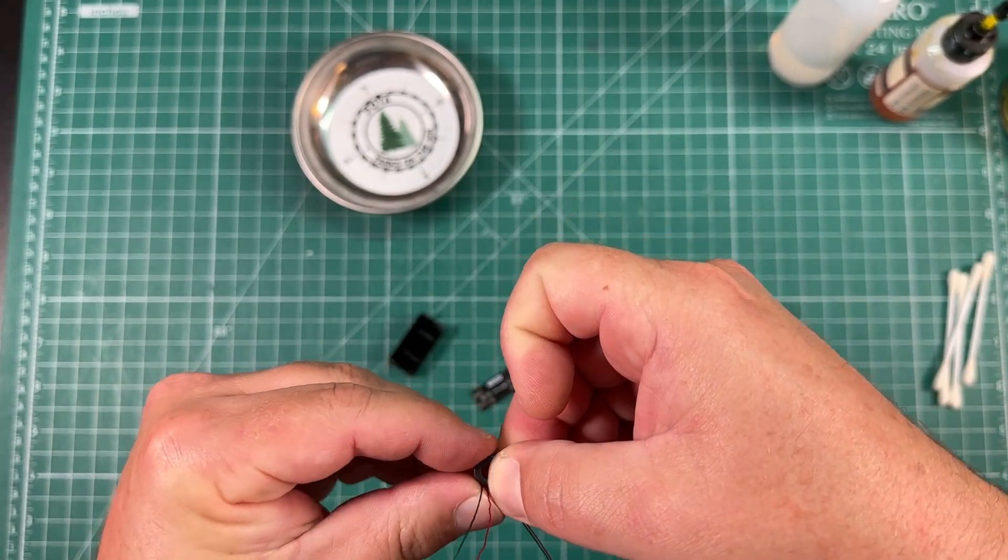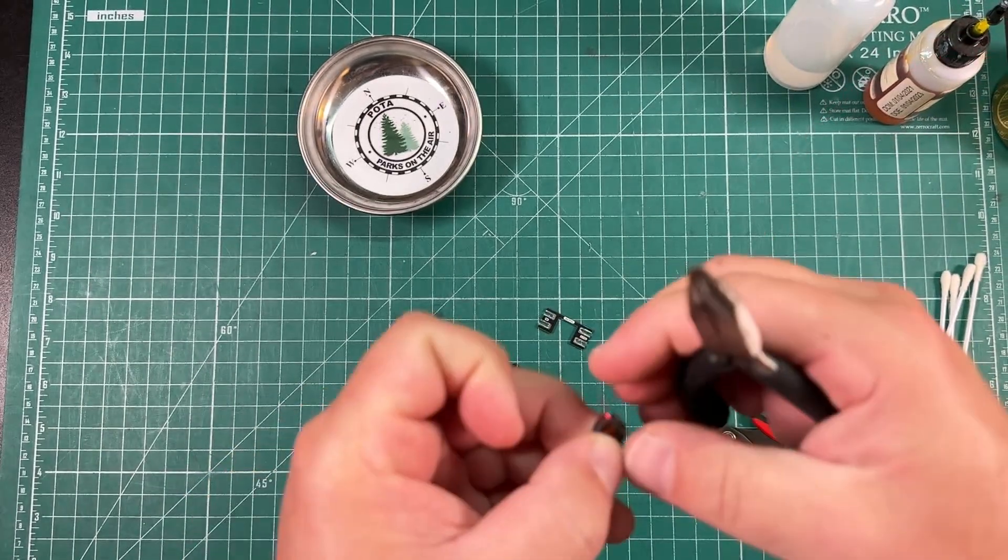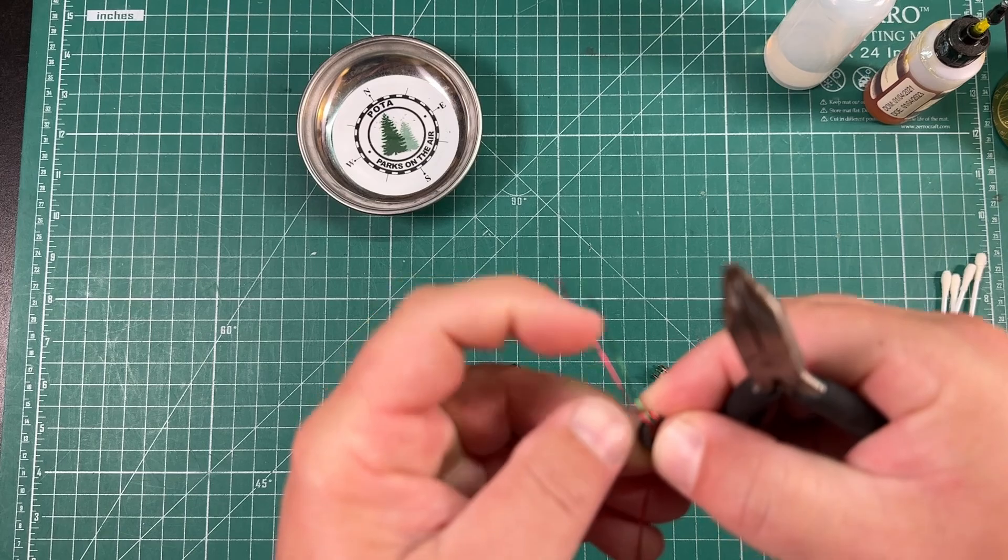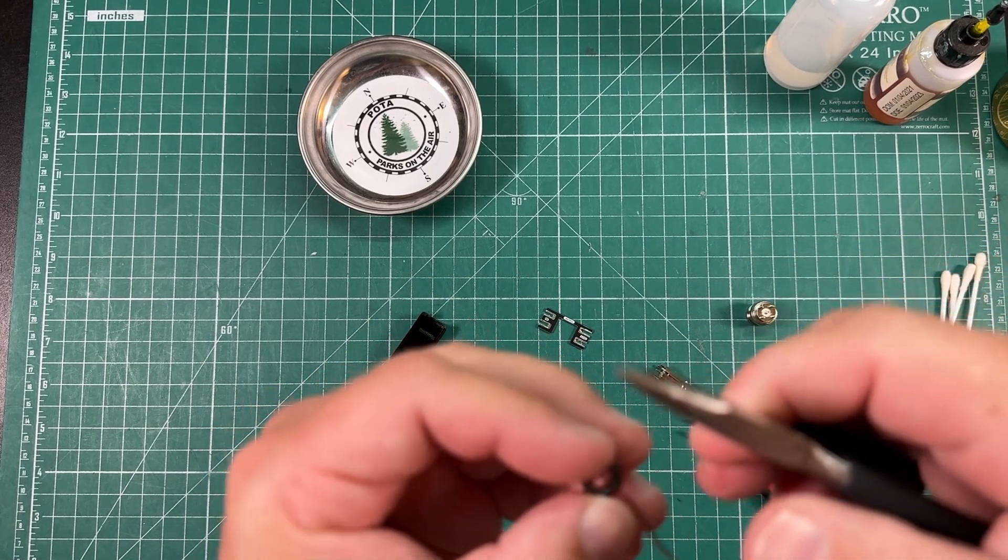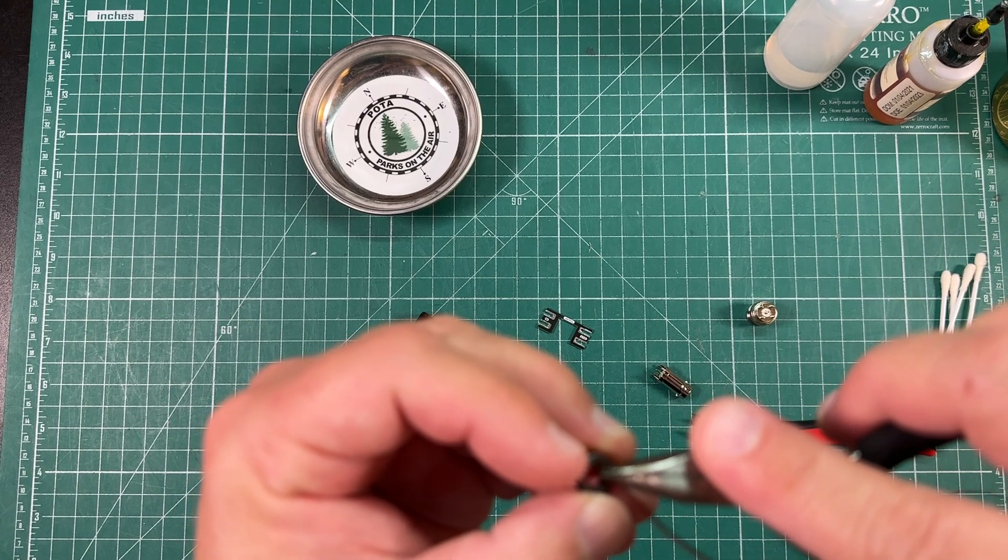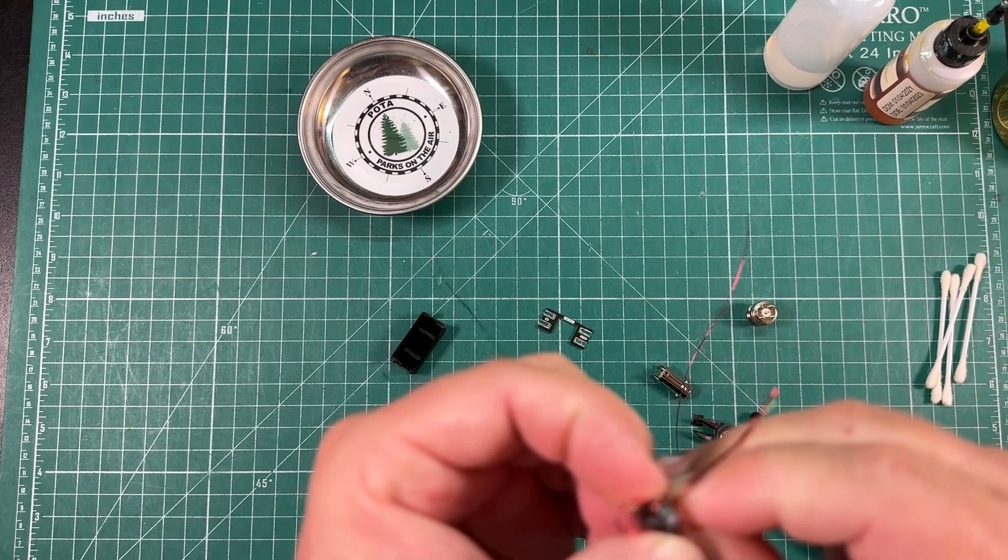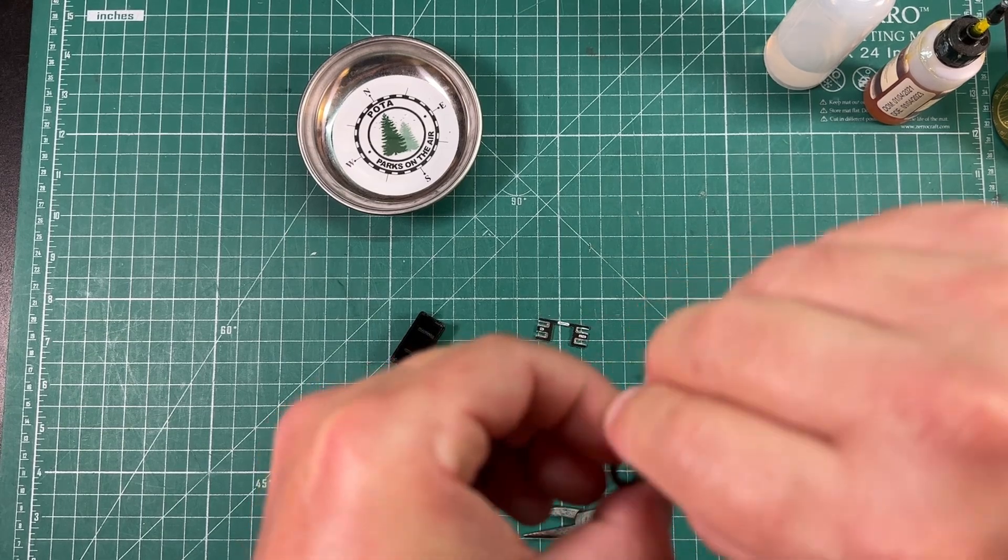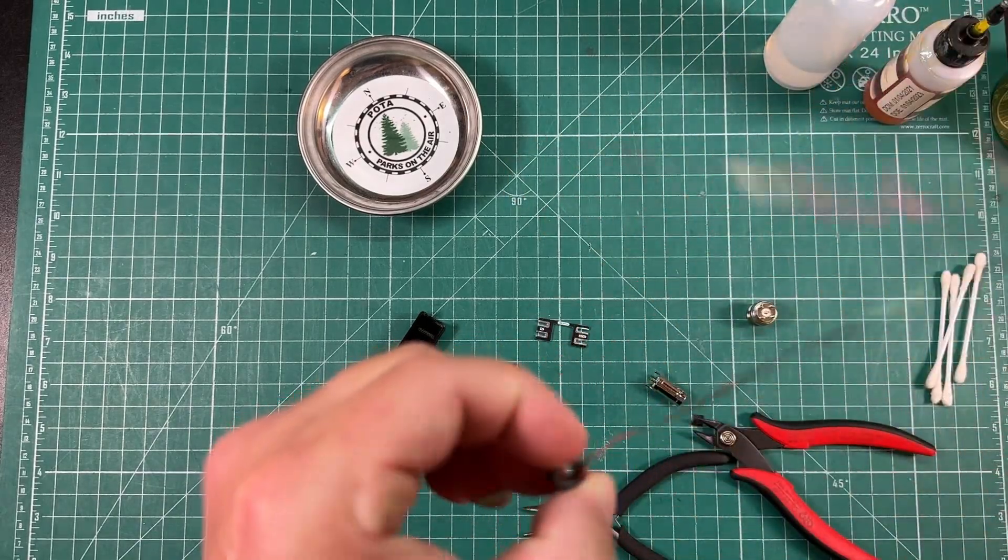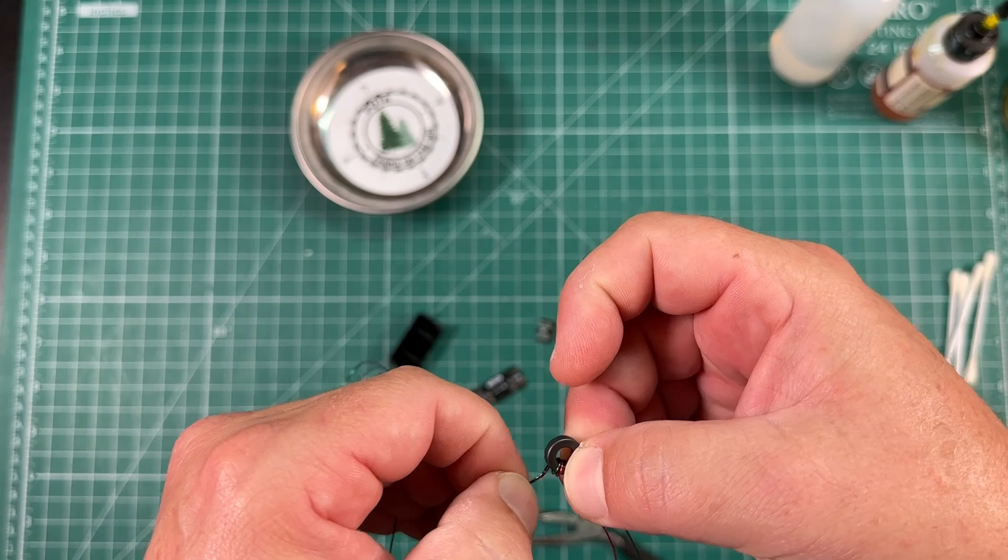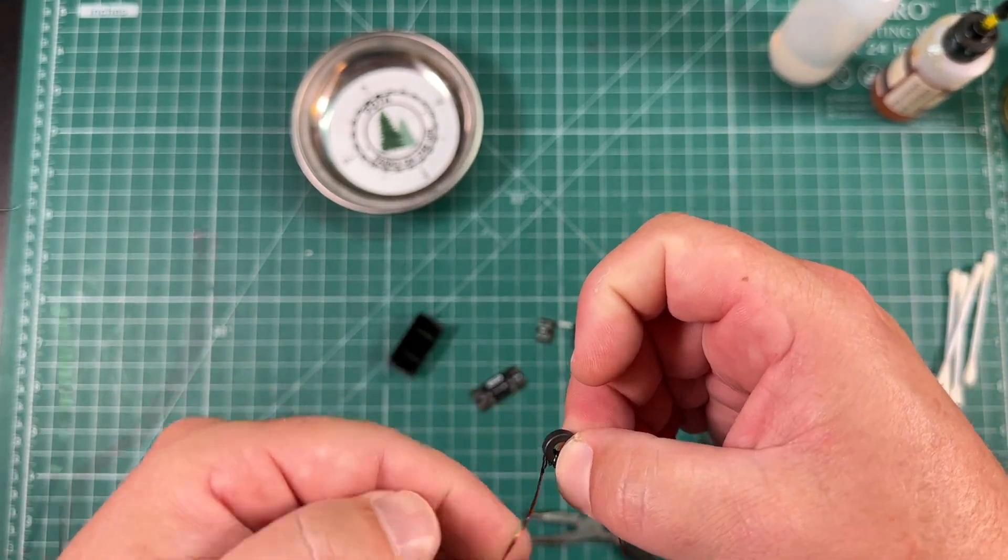I'm just going to fold the wire over and kind of coax it through the hole with some pliers to keep everything from crossing the streams. We don't want to do that. So there's two wraps. I'm going to do 10 more to give a total of 12 wraps. Wish me luck.